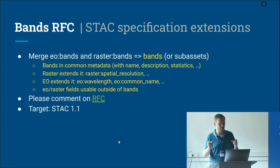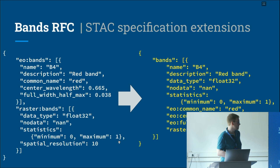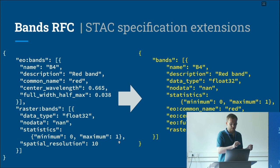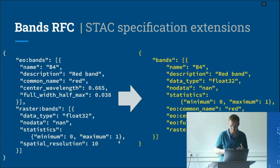This also adds the ability to use these fields at the asset level without defining bands. For example, raster spatial resolution right now can only be used in assets, but if you don't have multiple bands you can just define raster spatial resolution directly on the asset. The important change is that extension prefixes like 'eo:' move from the top level to the second level, with core fields like name and description unprefixed. It's essentially just renaming fields.